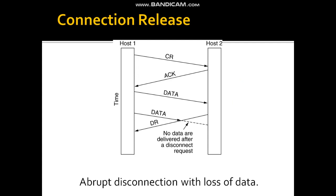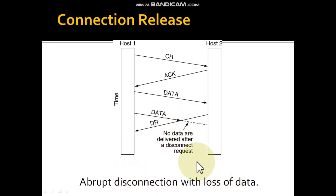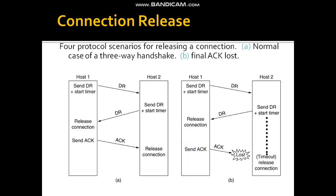Now, what is connection release? Just as we established a connection, we also have to release it. There are two hosts, host 1 and host 2. If host 2 sends a disconnection request while host 1 is still sending data, there is no acknowledgement sent — this is called loss of data, also referred to as the 'two-army problem'. There are four protocol scenarios for releasing a connection.